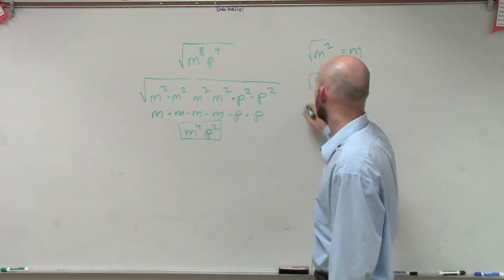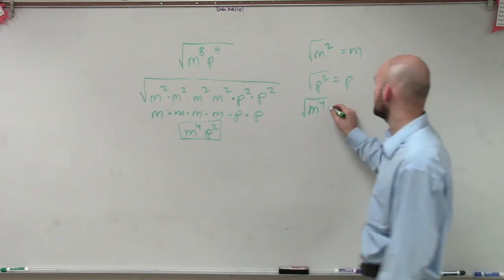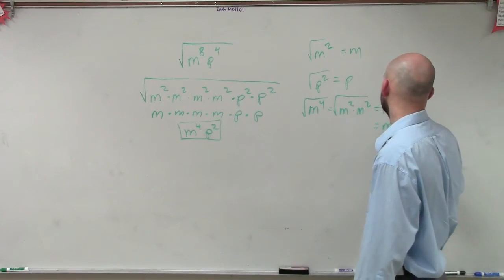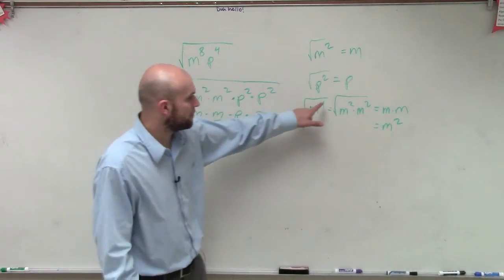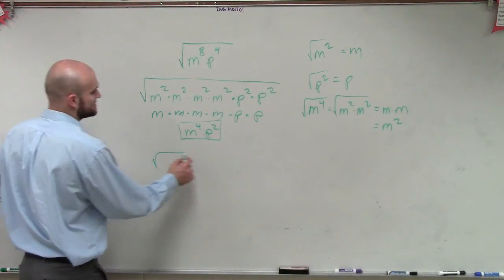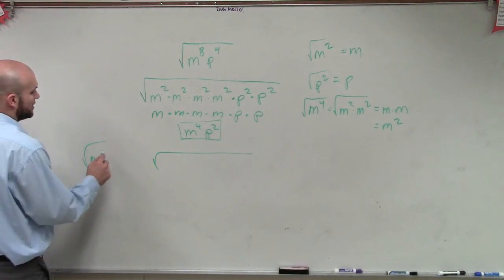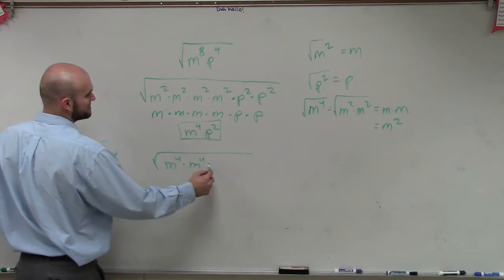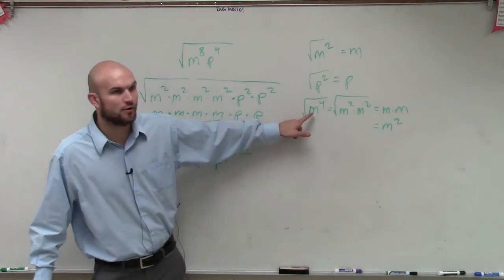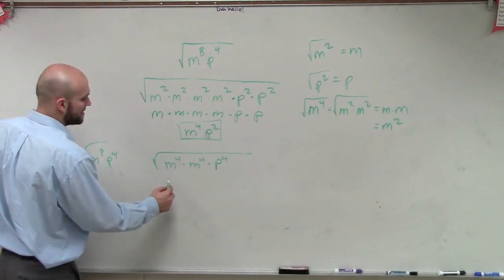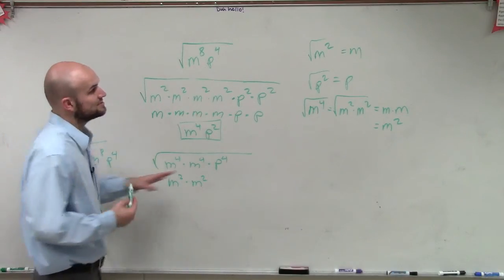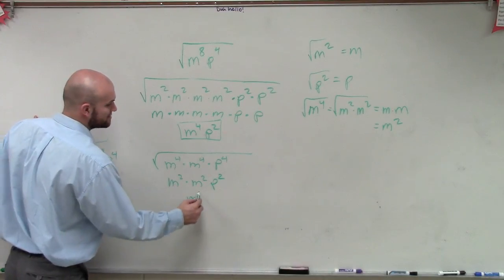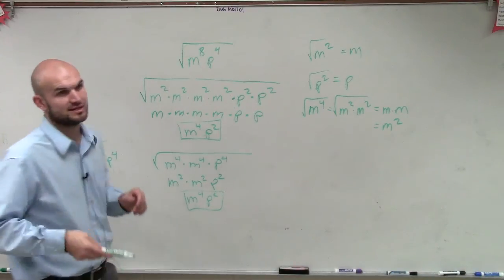So let's continue. What about the square root of m to the fourth? Well, the square root of m to the fourth is the same as the square root of m squared times m squared, which equals m times m, which equals m squared. So the square root of m to the fourth power is m squared. I could have done this more easily: the square root of m to the eighth times p to the fourth — since the square root of m to the fourth is m squared, we get m squared times m squared times the square root of p to the fourth, which is p squared. And m squared times m squared is m to the fourth, times p squared — which is the exact same answer.